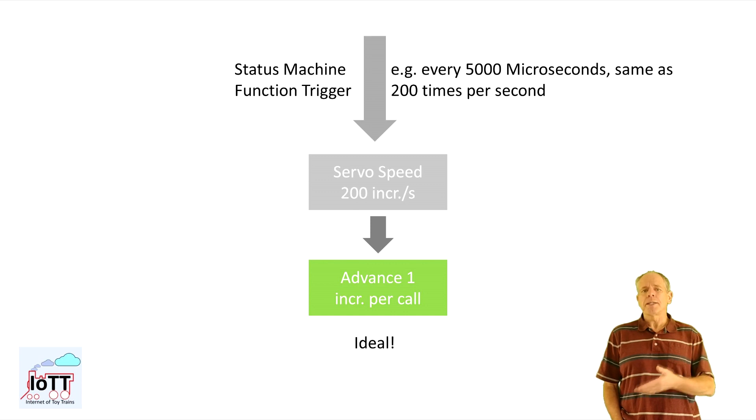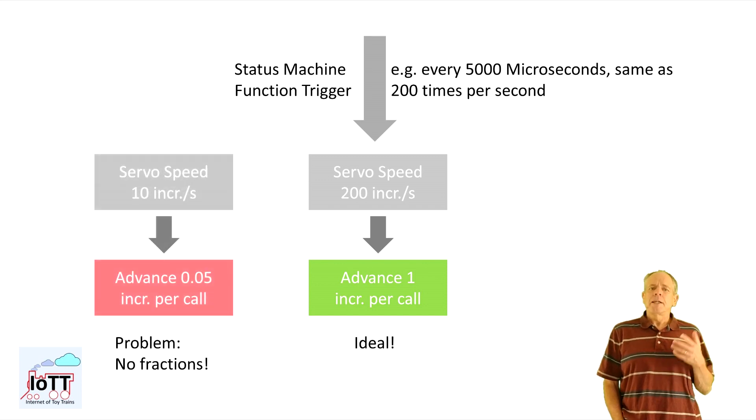Let's assume we want to be able to move at speeds from about 10 to 1200 increments per second, which is the maximum speed of the servo. If the status machine is called every 5 milliseconds, that would mean that the minimum speed of 10 increments per second, the current position would change by 0.05 increments each time. Unfortunately, the servo cannot do fractions of an increment, so the movement would be lost.